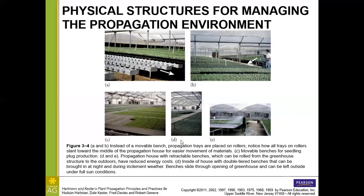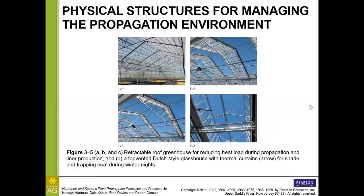We also have an example where they've simply put all of the plants on the floor, and here on the end the plants are being moved out into full sun conditions. Passive ventilation or retractable roof greenhouses have become pretty popular because this allows the heat to be released into the environment instead of kept in the greenhouse. We also have an example with thermal curtains — you can see on D that the thermal curtains help with heat, both in terms of blocking it out during the summer and trapping it within the greenhouse so that it stays warm during the winter.